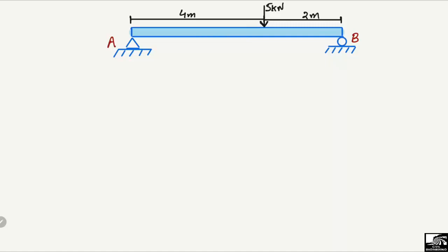We are going to analyze this simply supported beam and find out the support reactions at two points: point A and point B. The total length of the beam is 4 meters plus 2 meters, giving a total length of 6 meters. There is a concentrated load of magnitude 5 kN acting at a distance of 4 meters from the left end and 2 meters from the right end.